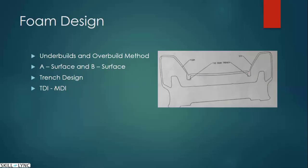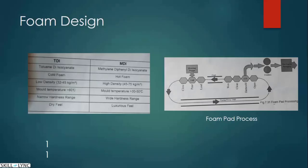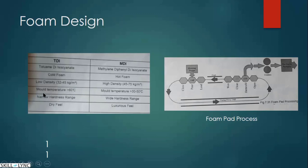TDI and MDI are the two processes used to make foam. TDI stands for Toluene Di-Isocyanate, while MDI stands for Methylene Diphenyl Di-Isocyanate. TDI uses lesser time — it can complete the process in 15 to 30 seconds — and uses very high temperatures, though it produces a low density foam.